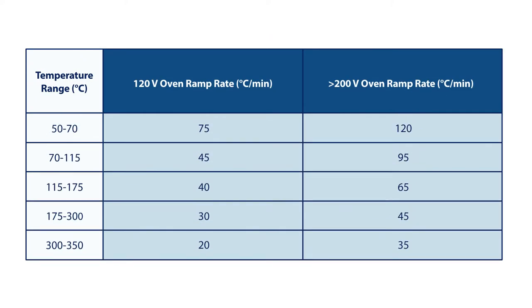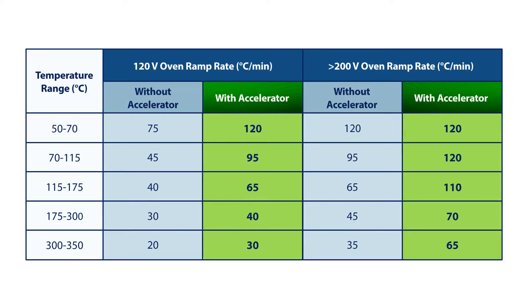The following are standard ramp rates in Agilent 6890 and 7890 GC ovens. Here's what's attainable in those same ovens with the GC accelerator inserts installed.